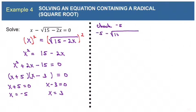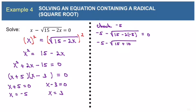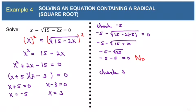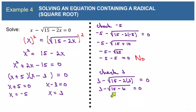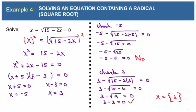We need to check both. For negative 5, plugging it into the equation gives negative 5 minus the square root of 15 minus 2 times negative 5. The negative 2 times negative 5 makes positive 10, and 15 plus 10 is 25. So we get negative 5 minus the square root of 25, which is negative 5 minus 5, which is supposed to equal 0 but does not. So negative 5 gets thrown out. Checking 3: 2 times 3 is 6, 15 minus 6 is 9, and 3 minus the square root of 9 is 3 minus 3, which really is 0. So our only solution is 3.